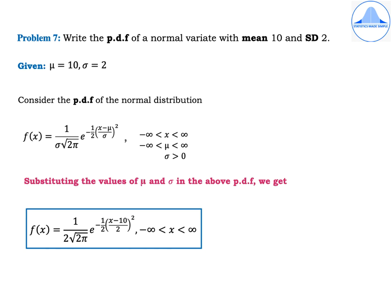Now substitute the values of mu and sigma into the PDF. We get f(x) = 1 / (2√(2π)) · e^(−½((x−10)/2)²), where minus infinity is less than x is less than infinity.